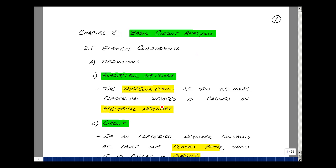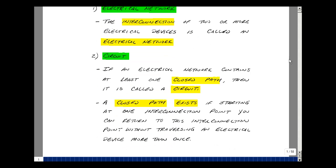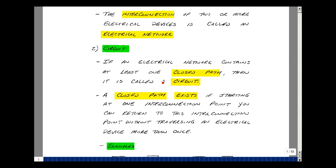The interconnection of two or more electrical devices is called an electrical network. If an electrical network contains at least one closed path, then it's called a circuit. A closed path exists if starting at one interconnection point, you can return to this interconnection point without traversing an electrical device more than once.